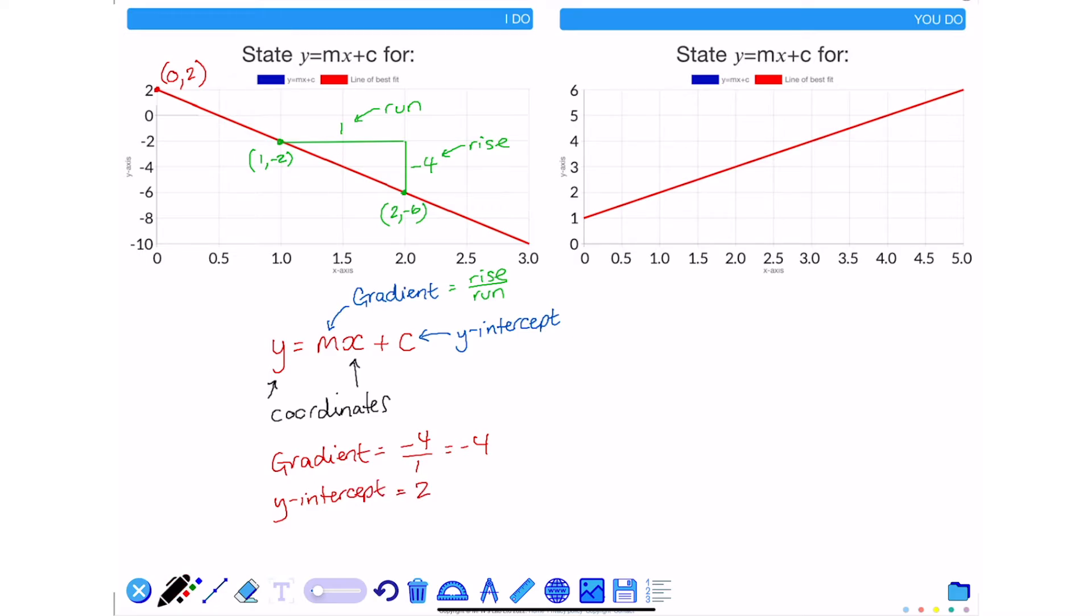So now that I've calculated m and I know my y-intercept, that means the equation of this line is y equals minus 4x plus 2.